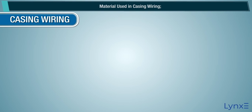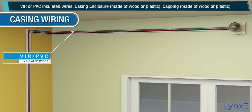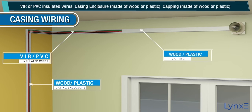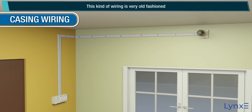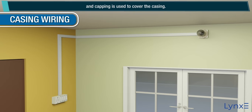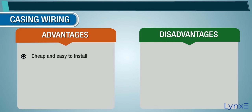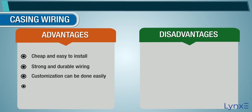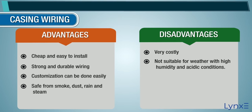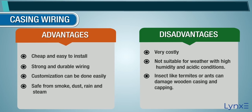Casing Wiring: Materials used include VIR or PVC insulated wires and a casing enclosure made of wood or plastic. This kind of wiring is very old fashioned. Generally, PVC or VIR insulated wires are carried through the casing enclosure, and capping is used to cover the casing. Advantages: Cheap and easy to install, strong and durable, customization can be done easily, safe from smoke, dust, rain, and steam. Disadvantages: Very costly, not suitable for weather with high humidity and acidic conditions, insects like termites or ants can damage wood encasing and capping, and there is a high risk of fire.